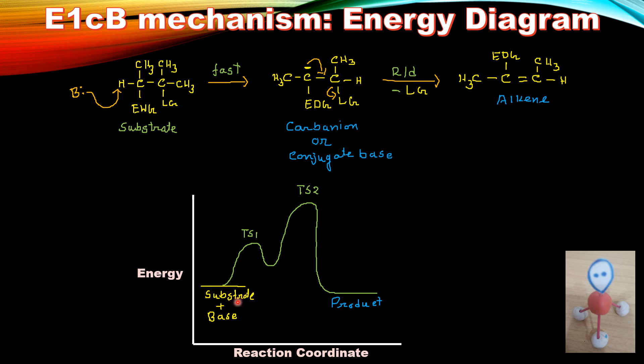This is the energy of substrate and base. It reaches transition state 1 and gives the intermediate carbon ion which is known as the conjugate base.